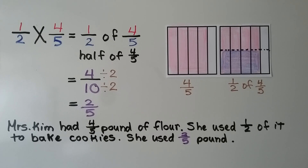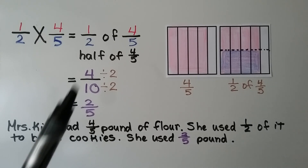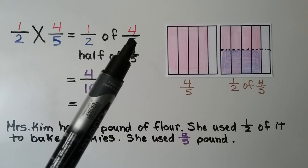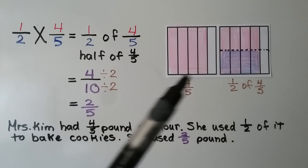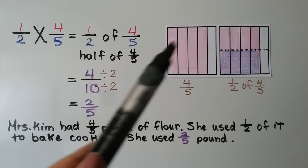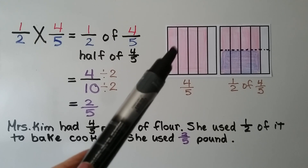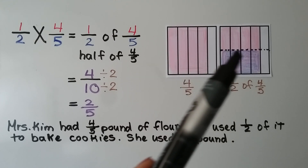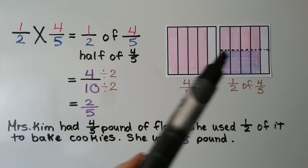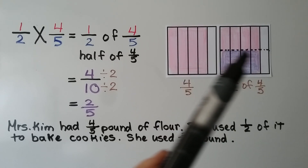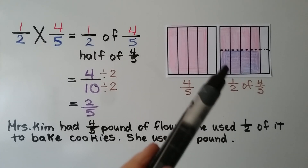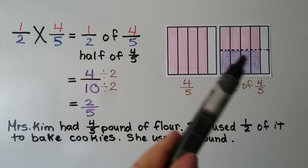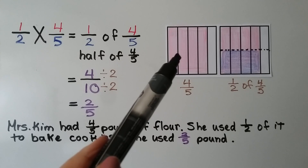Here we have one-half times four-fifths, which means one-half of four-fifths. We shade in four-fifths of a model. We need to find half of this, so we split the model in half going horizontally.